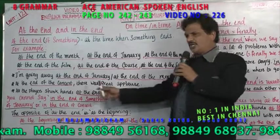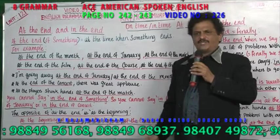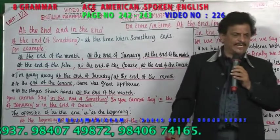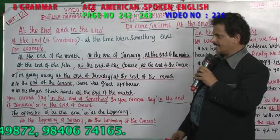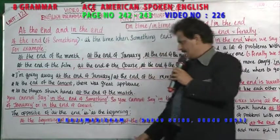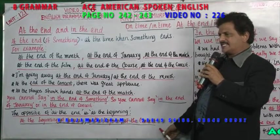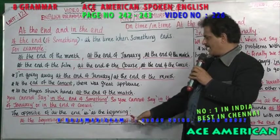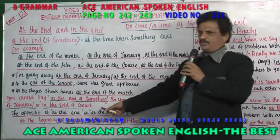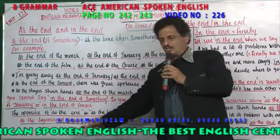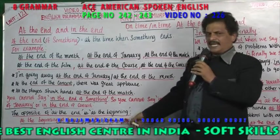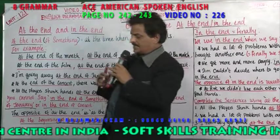You cannot say 'in the end of something' — that's wrong. You can't say 'in the end of January' — it's wrong. 'In the end of the concert' — it's wrong. So the opposite of 'at the end' is 'at the beginning.' At the end, opposite is at the beginning. At the beginning of January, at the beginning of the concert — concert means orchestra.